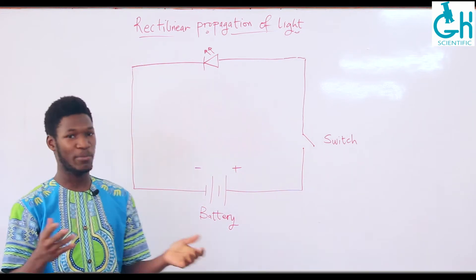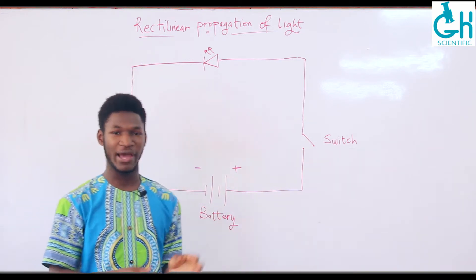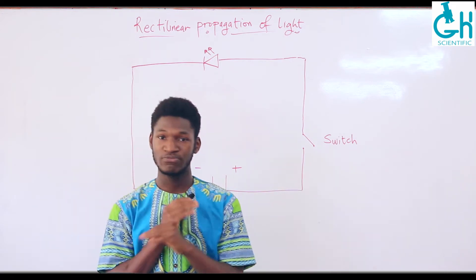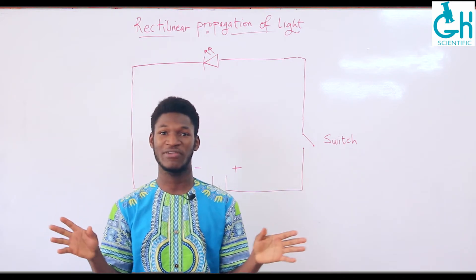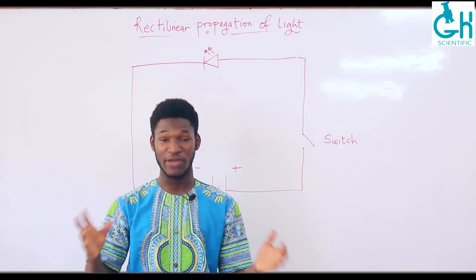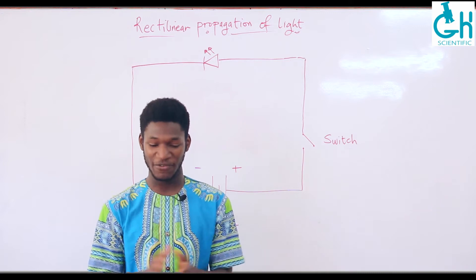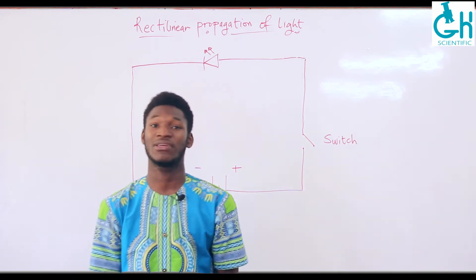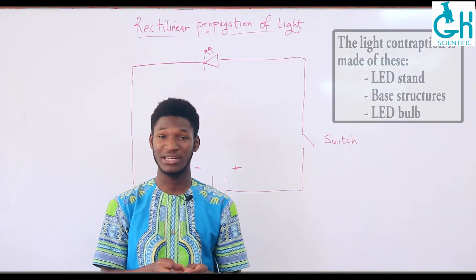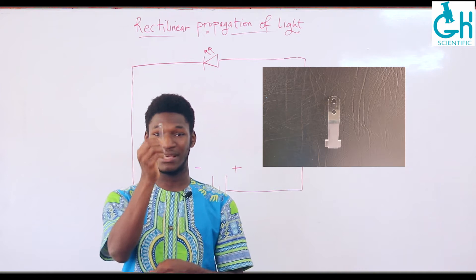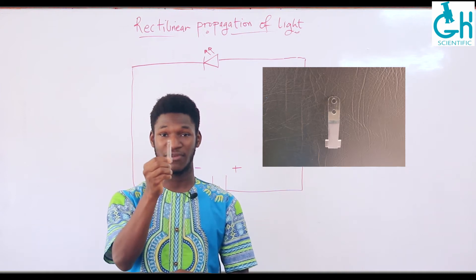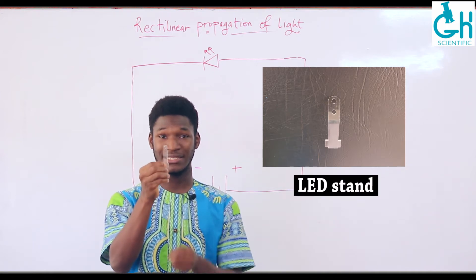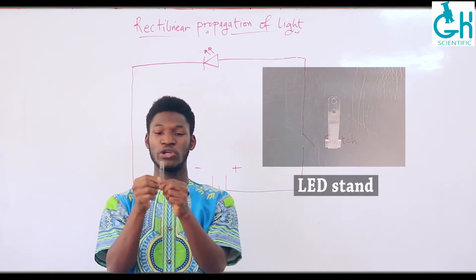We'll also talk about why we have this circuit here. To do a quick run-through: the first part is called the light contraption, which is composed of this piece right here — our LED stand. You're going to put the LED bulb into one of these holes.